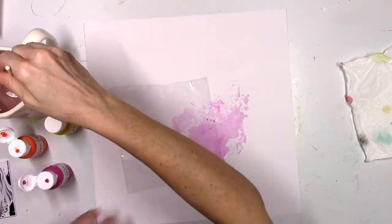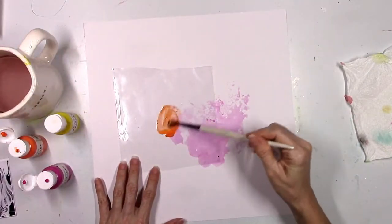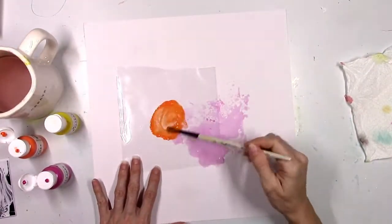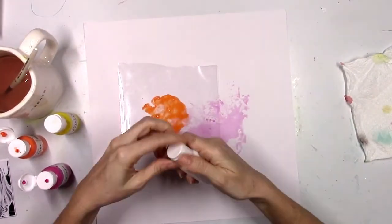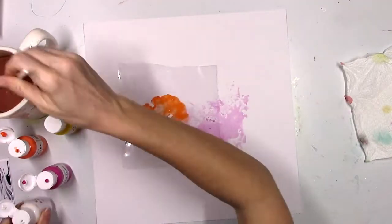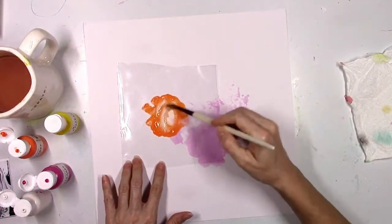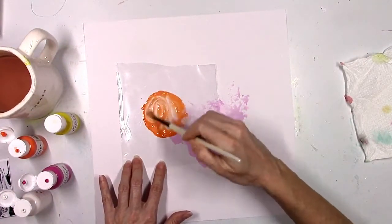So I'm going to layer some of the orange on top of that, and this is called Orange You Glad. And as you can see these are very bright and bold colors. So I'm going to add a little bit of the white that's called Three Sheets to the Wind just to soften up that orange a little bit.